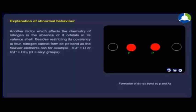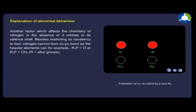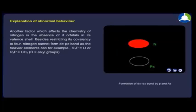Another factor which affects the chemistry of nitrogen is the absence of d orbitals in its valence shell. Besides restricting its covalency to 4, nitrogen cannot form dπ-pπ bonds as the heavier elements can form, for example, R₃P=O or R₃P=CH₂ where R is an alkyl group.